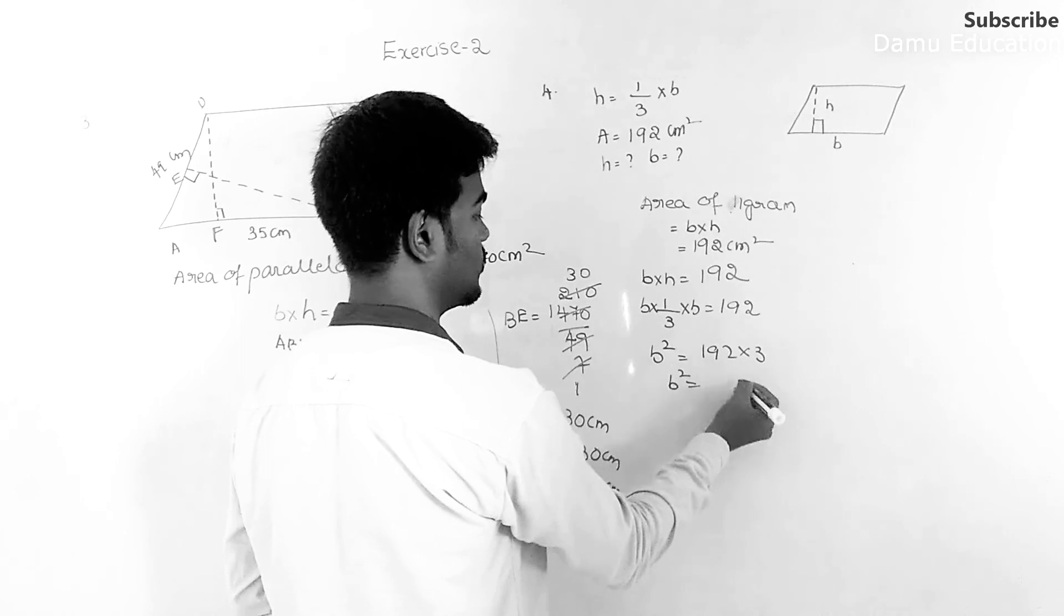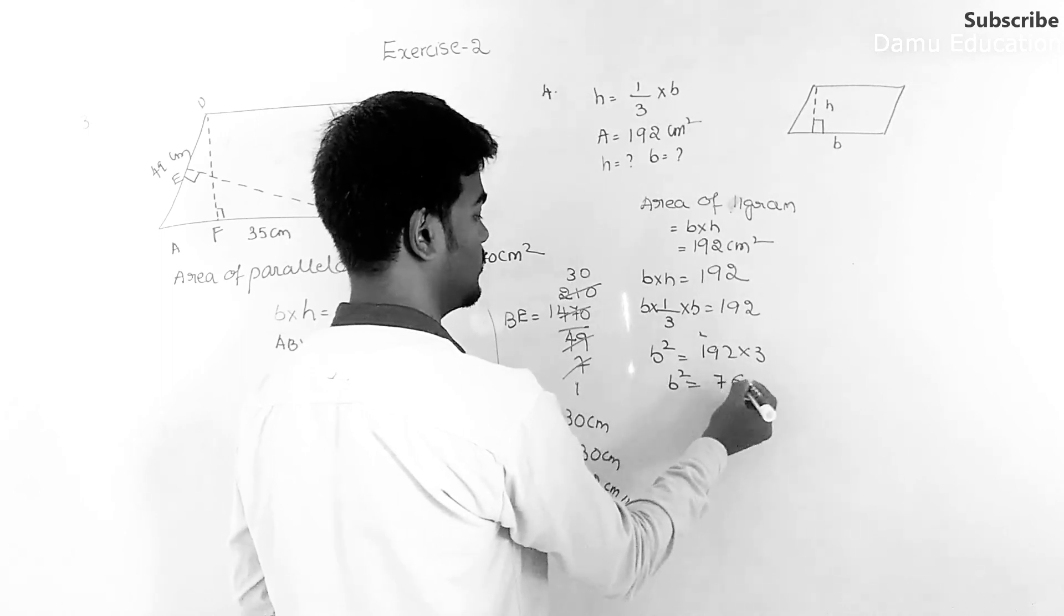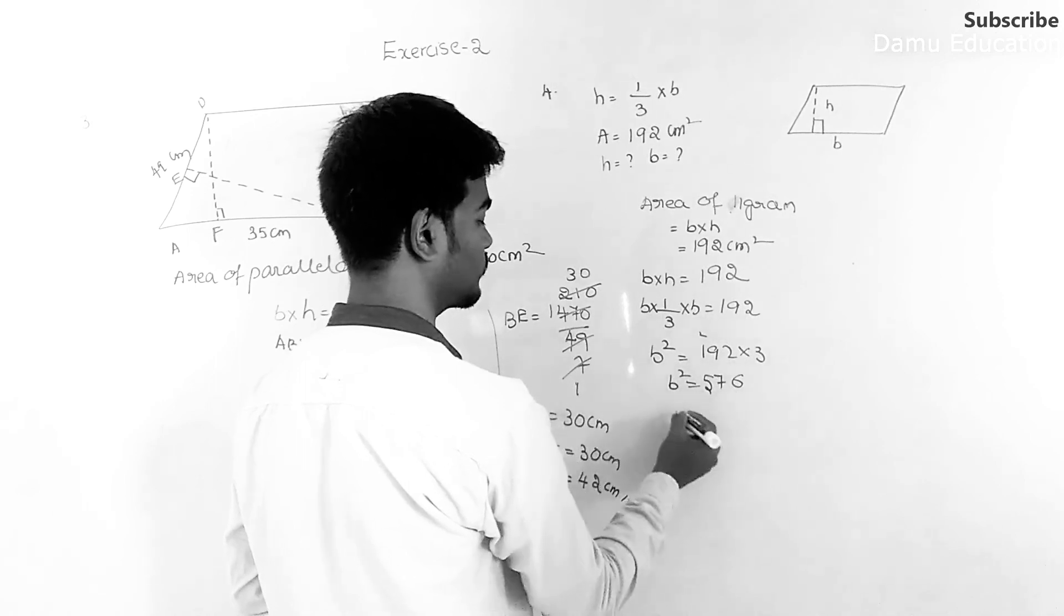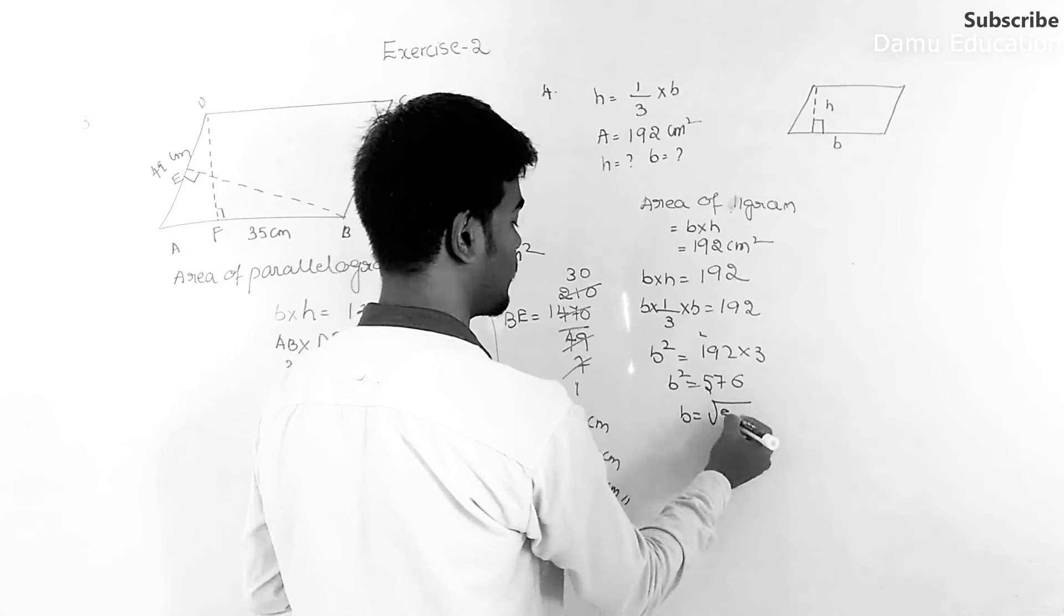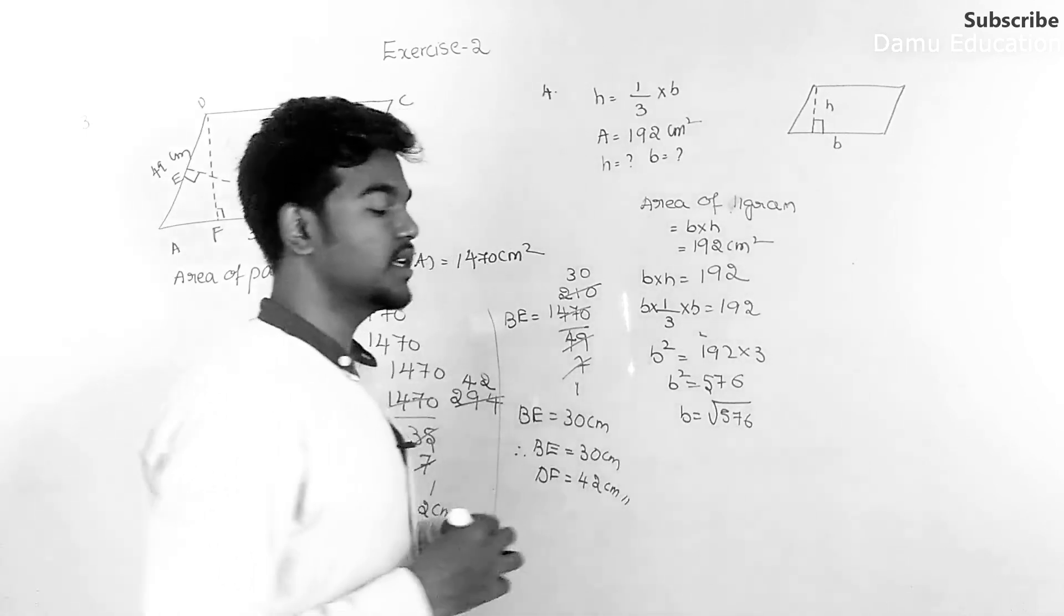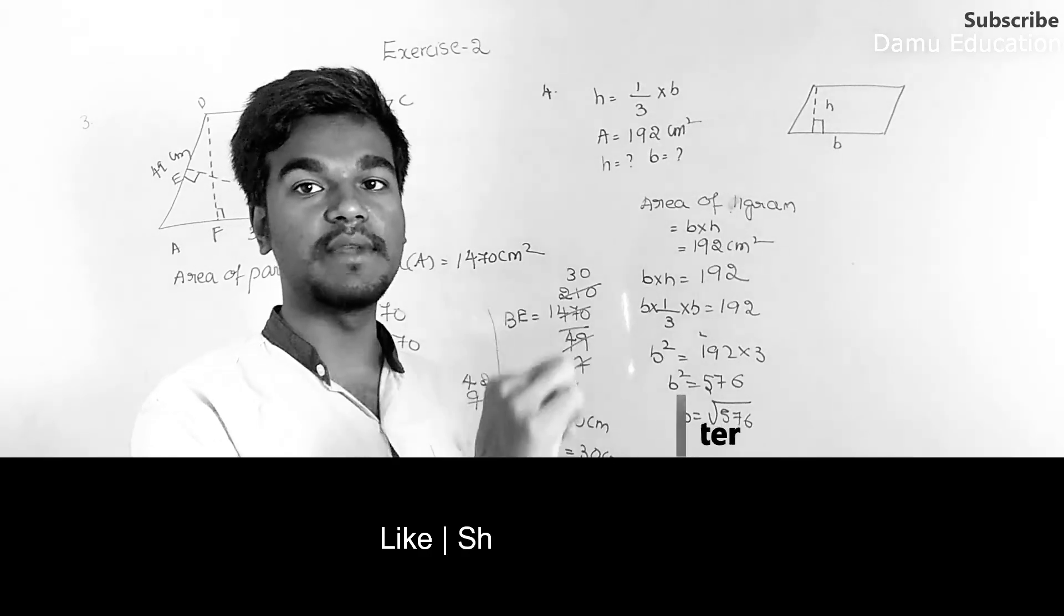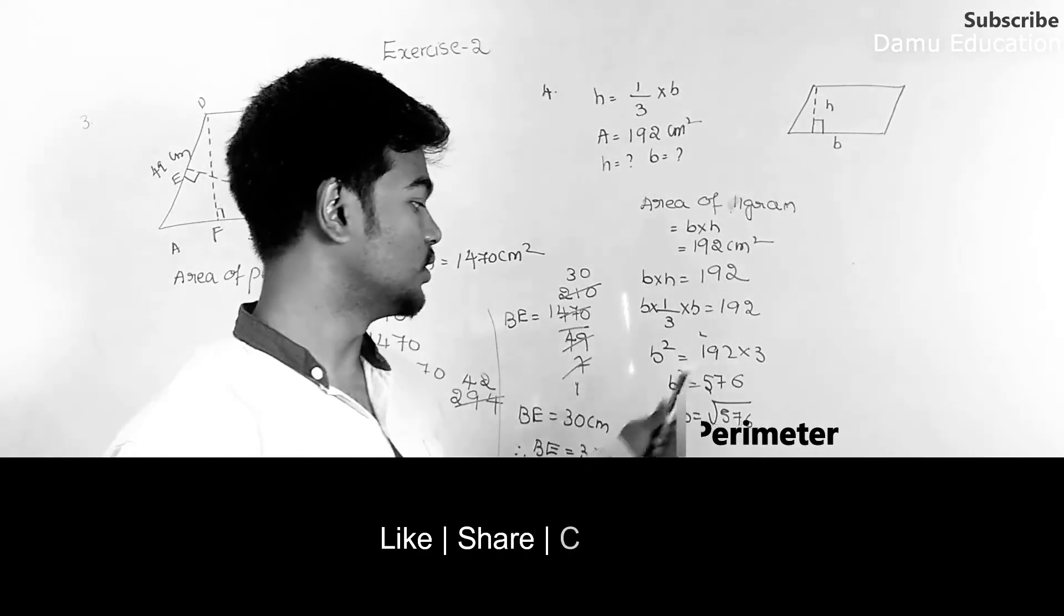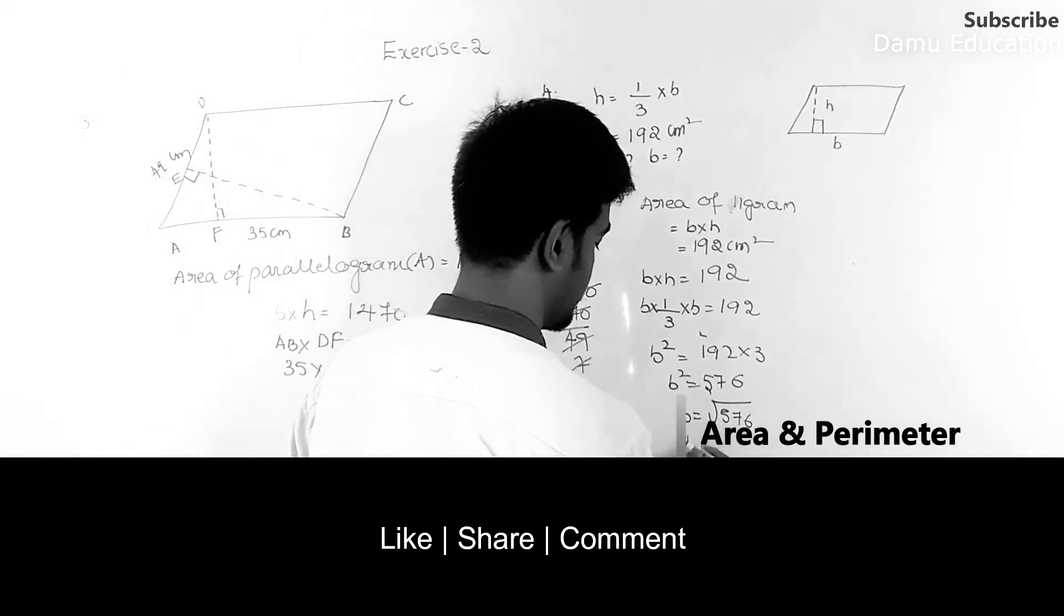What is that? 3 into 2 is 6, 3 into 9 is 27. 7, 3 into 1, 3 into 5. So here B will be equal to square root of 576.